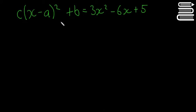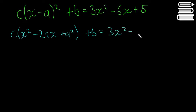So the first thing we're going to do is we're going to just multiply this side out and I'm going to do it in blue. So I'm going to keep the c separate for now, we're going to get x squared minus 2ax plus a squared plus b is equal to 3x squared minus 6x plus 5.